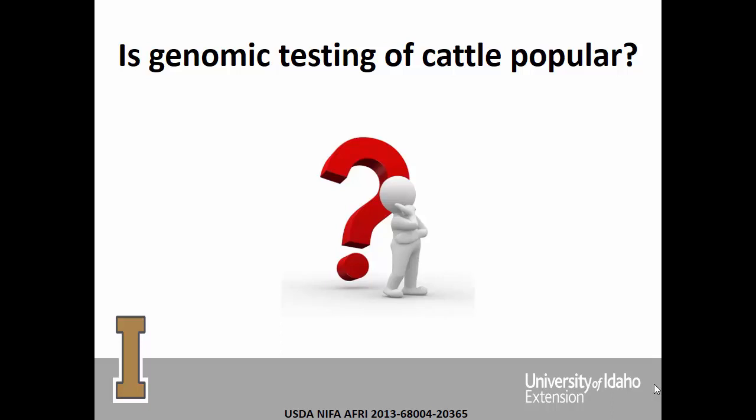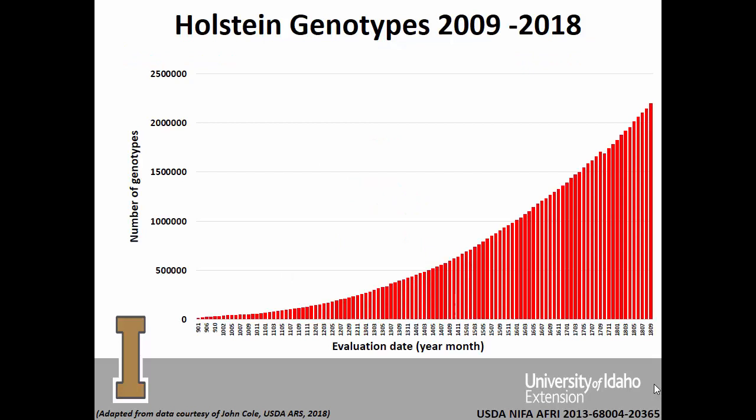Is genomic testing of cattle popular, or is there only a small critical mass that has been tested? Looking at Holstein genotypes from 2009 to 2018 — these are cumulative numbers — it's over 2.25 million genotypes for Holstein animals. That's a significant number. The vast majority in recent years have been females, not males, although males continue to be tested for the AI industry. The adoption has caught on like wildfire, especially for females.